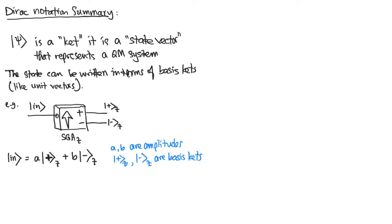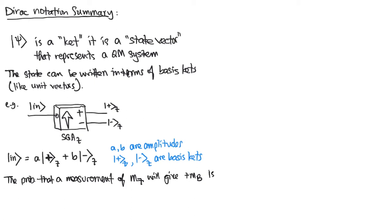The probability that a measurement of mz will give plus is given by the magnitude squared of the coefficient of that basis state plus-z. So you take the amplitude and you square it. The probability that a measurement of mz will give minus is likewise the modulus squared — the magnitude squared — of the other coefficient.